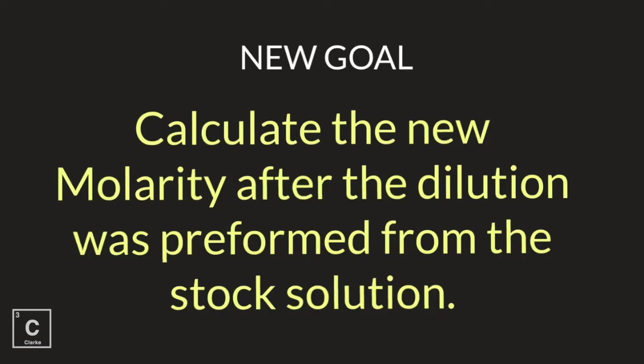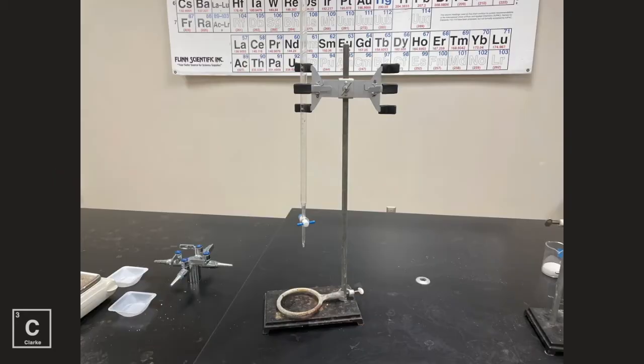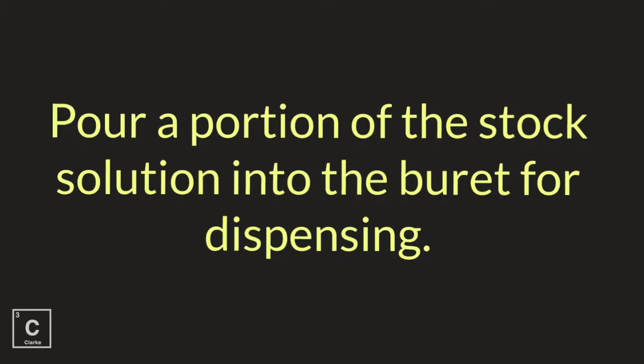Okay, so here we are ready for our second goal. We're going to calculate the new molarity after the dilution was performed from the stock solution. Make sure and pay attention how much of that stock solution I'm using. We need a very precise way to measure out how much stock solution we're going to use. I am going to use a burette. We use burettes to dispense very precise amounts of liquid. Pour a portion of the stock solution into the burette for dispensing.